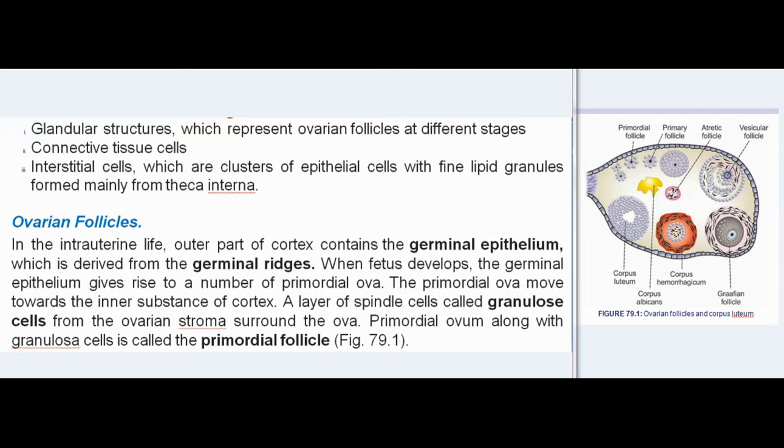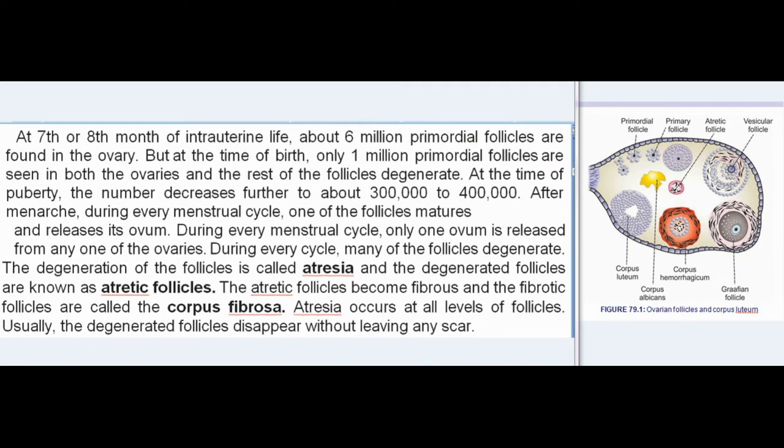Ovarian Follicles. In intrauterine life, the outer part of cortex contains the germinal epithelium, derived from the germinal ridges. When the fetus develops, the germinal epithelium gives rise to a number of primordial ova, which move towards the inner substance of the cortex. A layer of spindle cells called granulosa cells forms from the ovarian stroma around the ova. The primordial ovum along with granulosa cells is called the primordial follicle. At the seventh or eighth month of intrauterine life, about six million primordial follicles are found in the ovary.